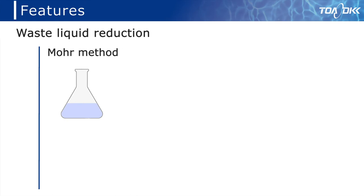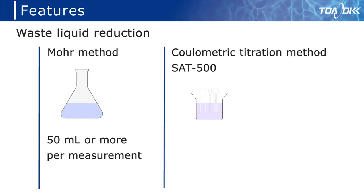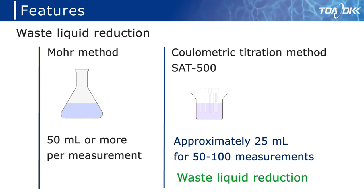When measuring soy sauce using the Mohr method, 50 ml or more of waste liquid is generated each time. On the other hand, with the SAT-500, the amount of waste liquid is about 25 ml in a series of 50 to 100 measurements, significantly reducing waste liquid.